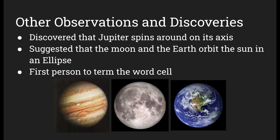He had a few more observations and discoveries: he discovered that Jupiter spins on its axis, and he suggested that the moon and Earth orbit the sun in an ellipse. He was also the first person to use the word 'cell,' because he believed the tiny walls looked like jail cells. The images on the bottom show Jupiter, the moon, and the Earth.